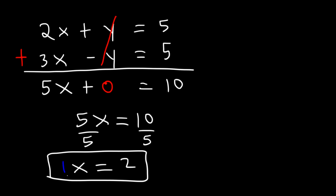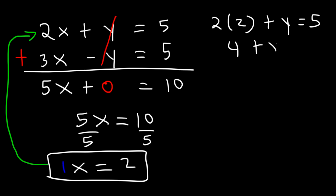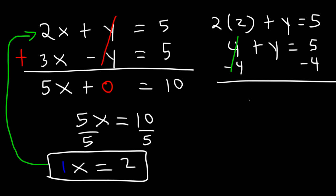Now that we have the value of x, what we need to do is plug it back into one of the original equations to get the value of y. Let's use the first one. So let's replace x with 2 and find the value of y. 2 times 2 is 4. So 4 plus y is 5. If we subtract both sides by 4, we can get the value of y. So y is equal to 5 minus 4, which is 1.